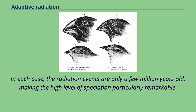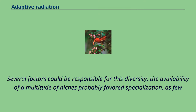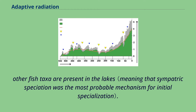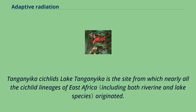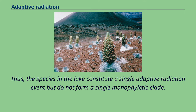Several factors could be responsible for this diversity. The availability of a multitude of niches probably favored specialization, as few other fish taxa are present in the lakes. Also, continual changes in the water level of the lakes during the Pleistocene could have created the conditions for secondary allopatric speciation. Lake Tanganyika is the site from which nearly all the cichlid lineages of East Africa originated. Thus, the species in the lake constitute a single adaptive radiation event but do not form a single monophyletic clade.